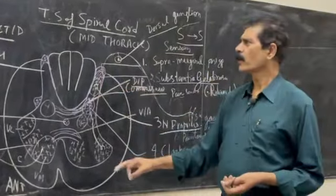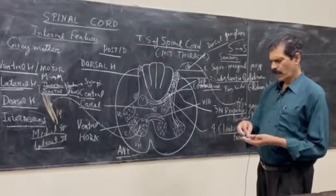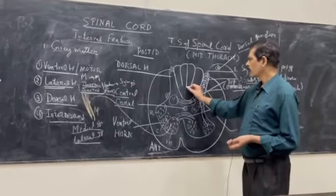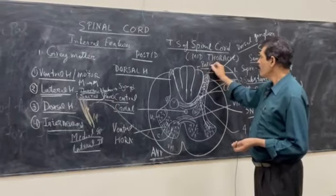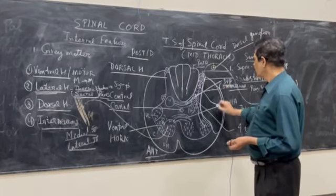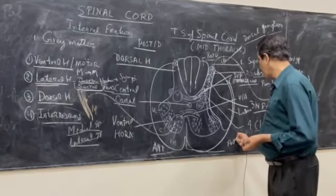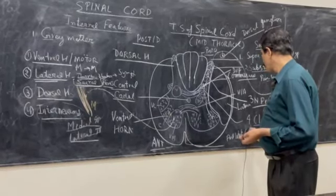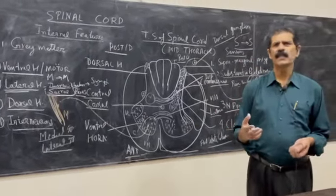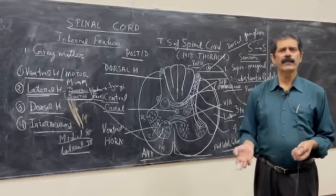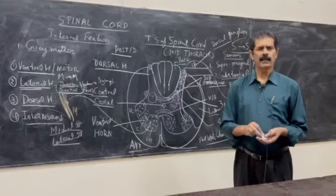This is all about the gray matter of the spinal cord. Next time, we will take the white matter which is present around it. The white matter has three parts: the posterior column, the lateral column, and the anterior white column. These white columns are bundles of axons or nerve fibers — some are ascending and some are descending. We will take each part of the white matter in the next class. Thank you.